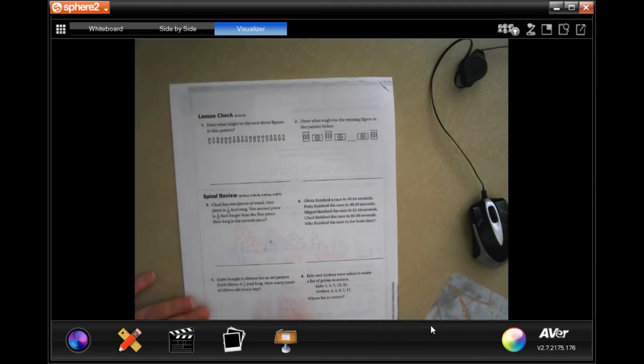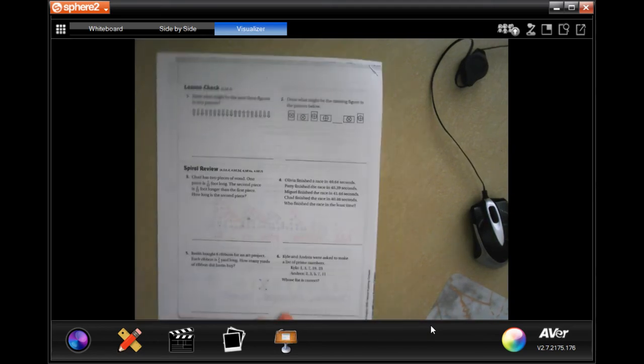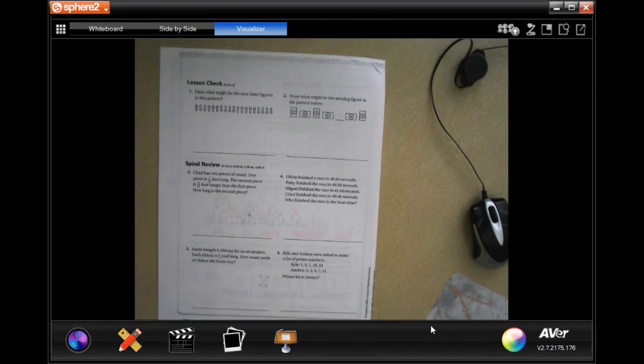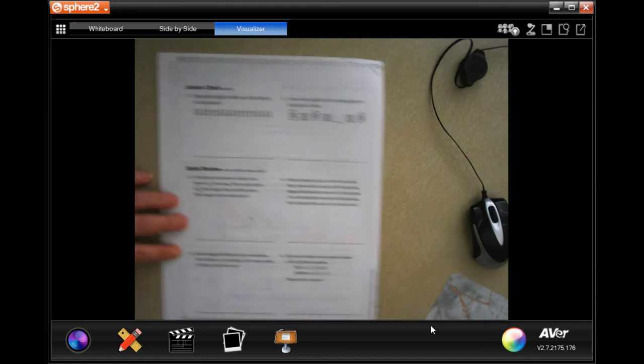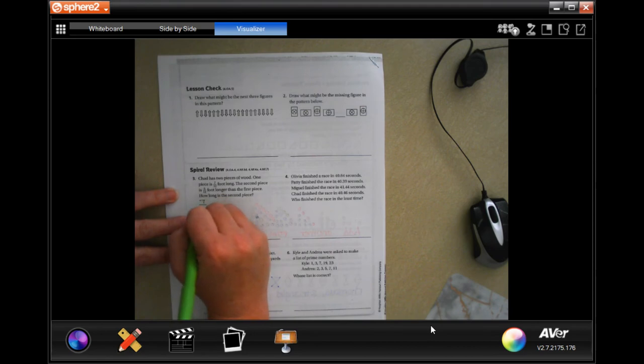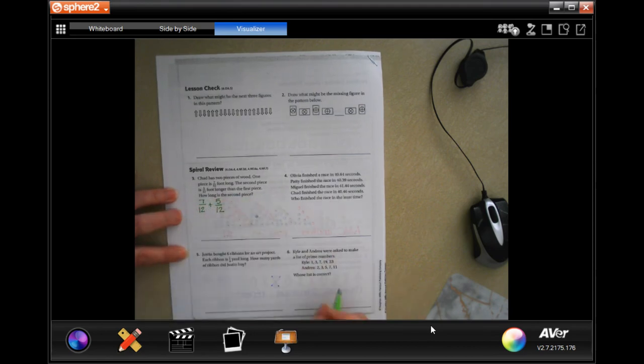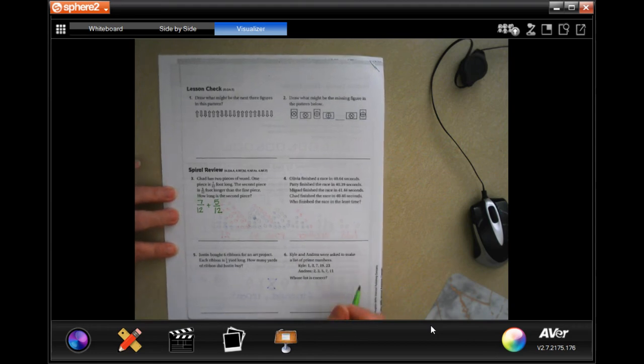We're gonna go on to the back where you guys are gonna do the lesson check, just like always, and we're gonna go down to the start of review. Okay, this is Chad has two pieces of wood, one piece is 7-12ths of a foot long, the second piece is 5-12ths of a foot longer than the first piece. So 7-12ths plus 5-12ths. So how long is the second piece?